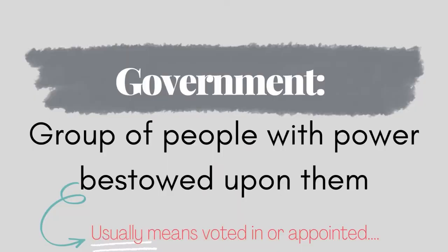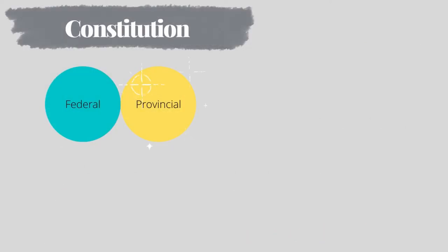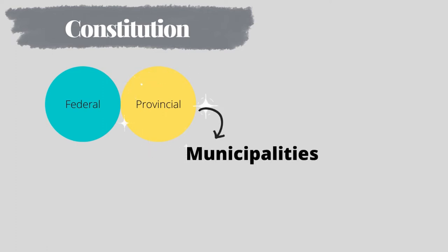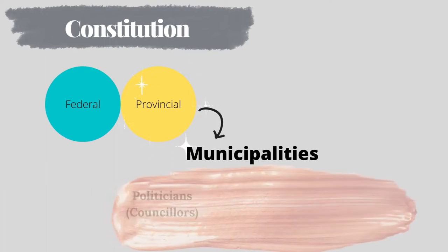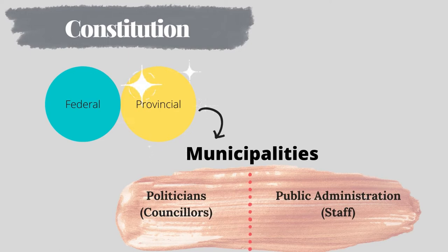The first concept we should explore is government, which may seem obvious but actually holds different meaning and plays out differently across communities in Canada. In essence, government points to a group of people who exercise power that is bestowed upon them. As noted last week, Canada's constitution gives provinces the power to create municipalities. In turn, Ontario has the Municipal Act legislation that sets out the structure and expectations of local government in our province. Under this act, municipalities are expected to be made of two key groups of people: politicians on one side and public servants on the other.